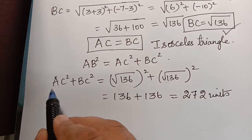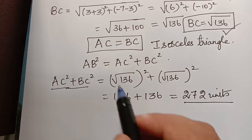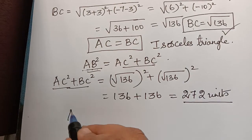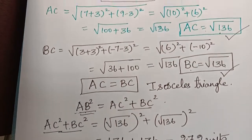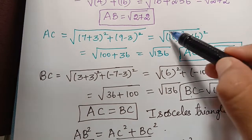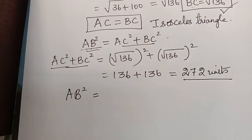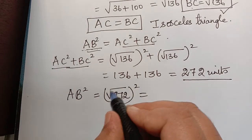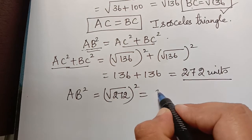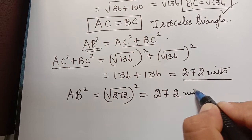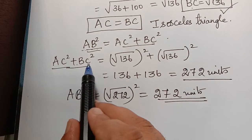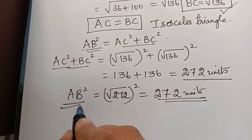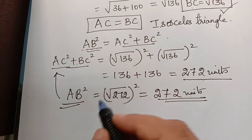Now for the left-hand side, AB² = (√272)² = 272 units. We observe that AC² + BC² = 272 and AB² = 272. Hence we have proved that AB² = AC² + BC², which is the Pythagoras theorem, confirming these three vertices form a right-angled isosceles triangle.